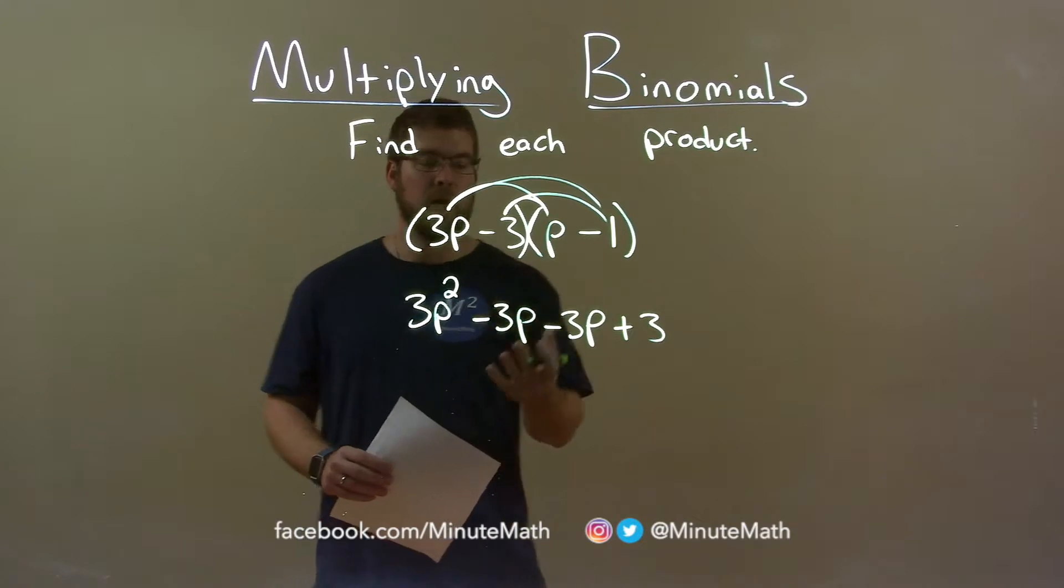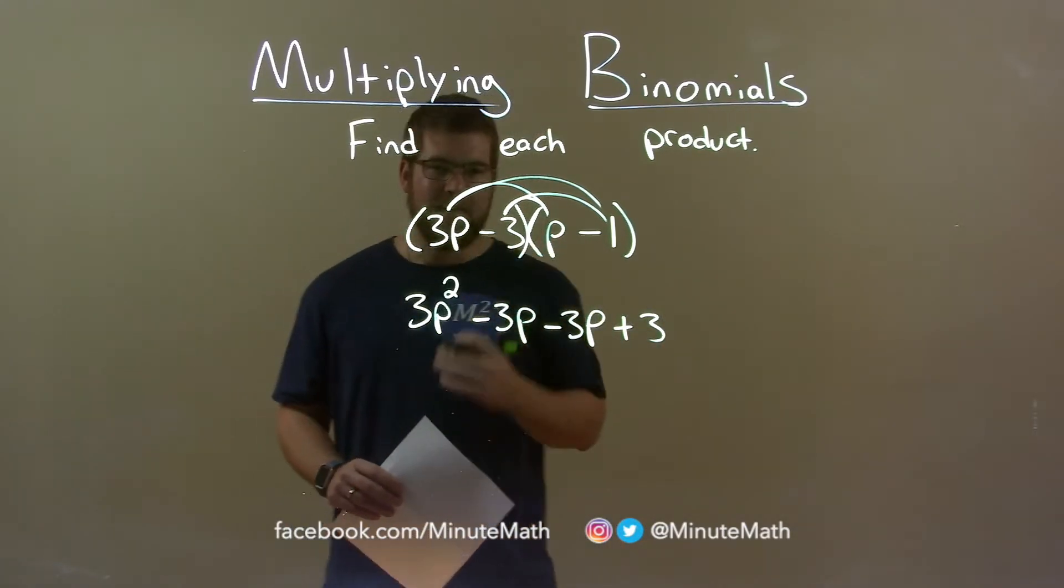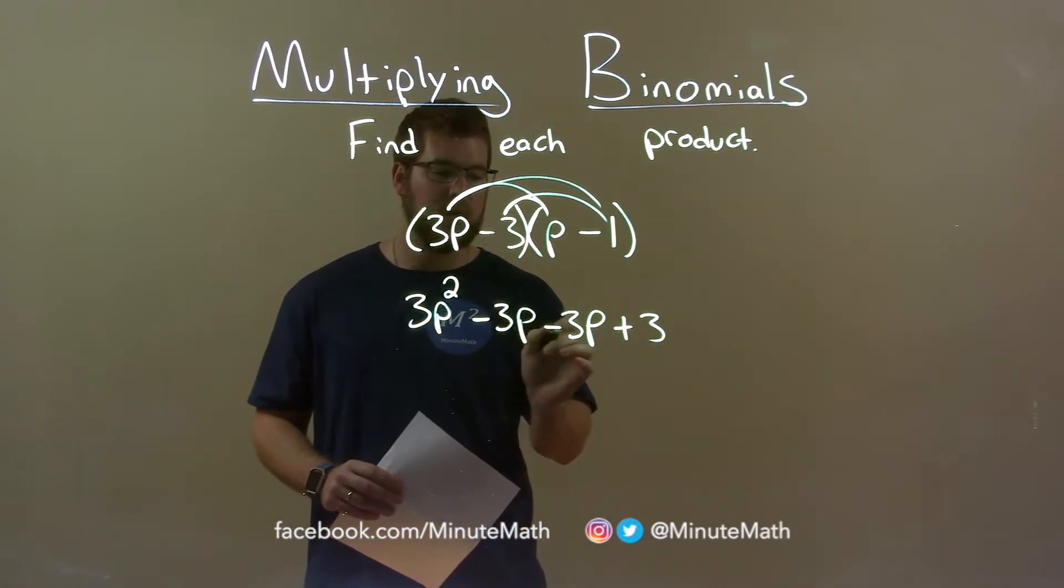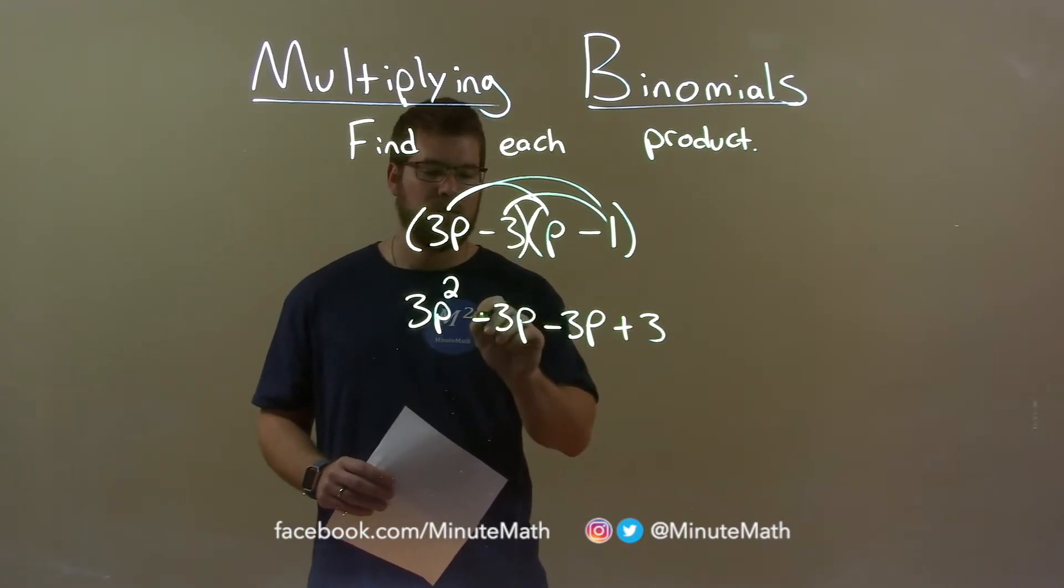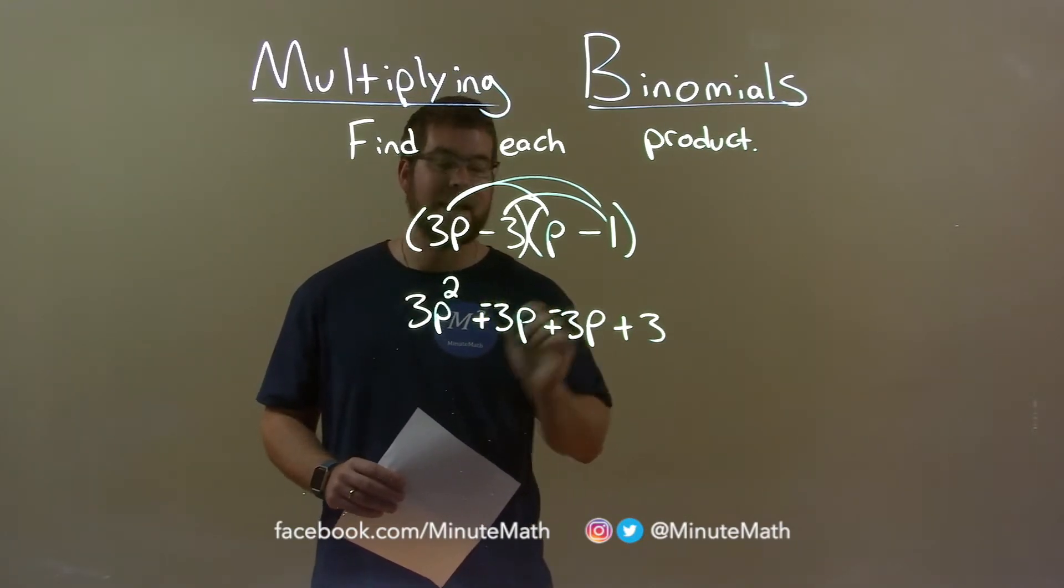So now we've got to combine our like terms and simplify. I find it's easier to convert this minus 3p to be plus a negative. So we plus a negative 3p and plus a negative 3p.